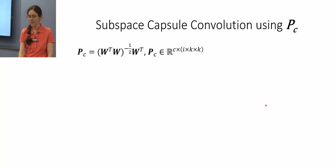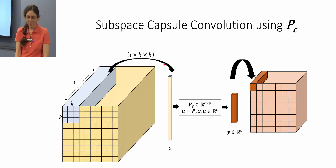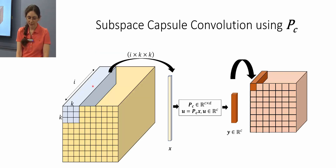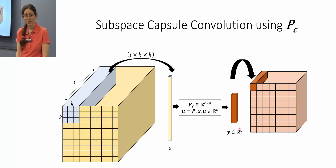Creating the subspace capsule convolution using the Pc transformation is now straightforward. If we want a convolutional kernel with receptive field k×k over i input feature maps and capsule size c, we create it using this formulation and convolve the Pc transformation over input feature maps to get output capsules with a reasonably small size of c dimensions.